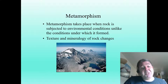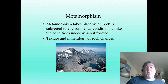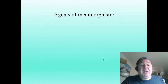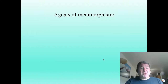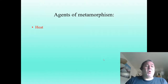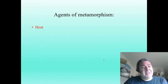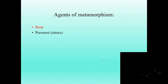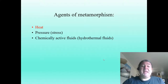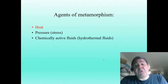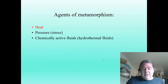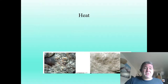In these circumstances, the texture and the mineralogy of the rock is going to change to more adapt to these new environmental conditions. Agents of metamorphism - there are three of them. First, heat. This is always the most important of the metamorphic agents. Second, pressure and stress. And third, chemically active fluids - hydrothermal fluids - superheated water with ions and everything that's been picked up and brought around to these metamorphic environments.